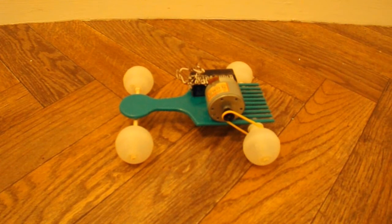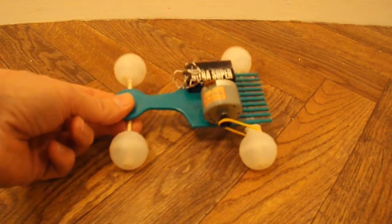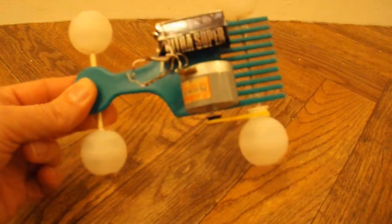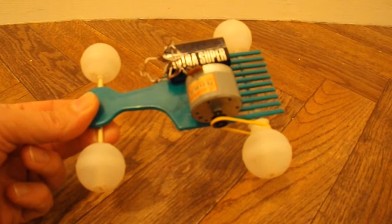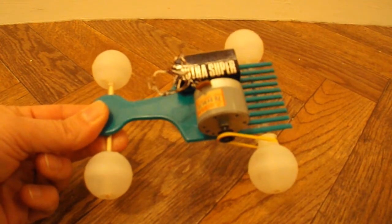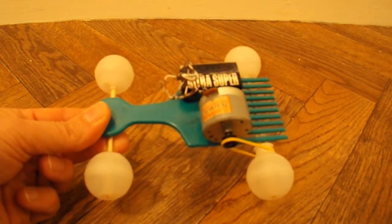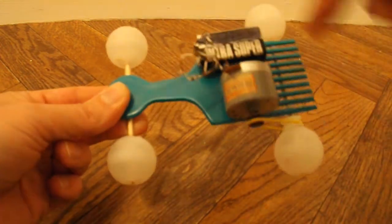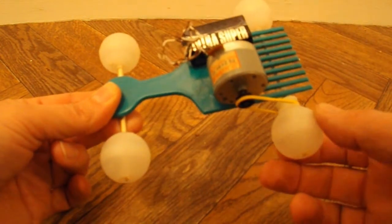OK, summary time. So what have we got? We've got a comb, hair comb, which I've cut to 15cm length. We've got four beer can widgets as the wheels.